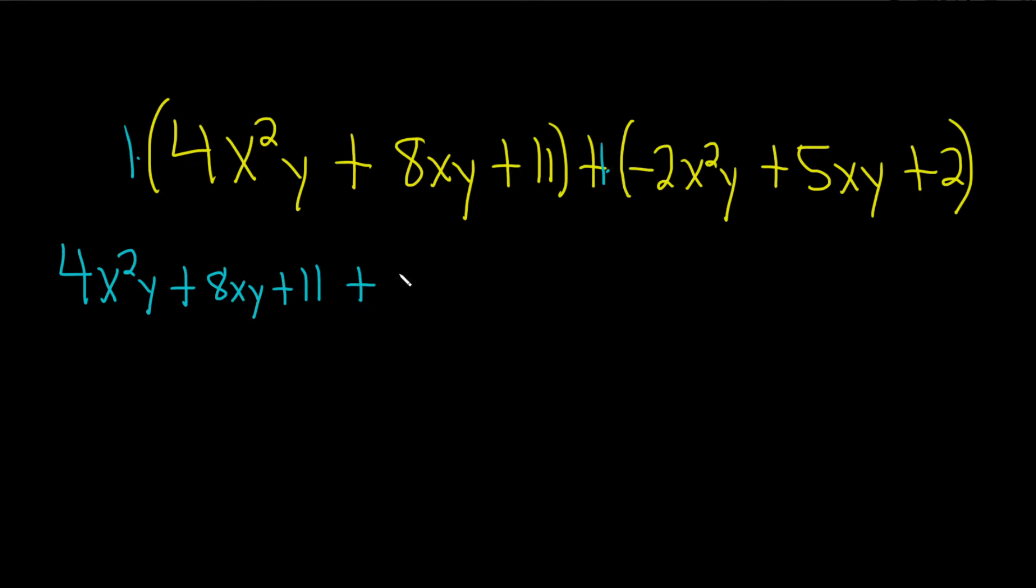Oh, it's actually not a plus sign, it's actually a negative 2x squared y, right? Because there's a plus here, and so there's a negative here, so this is negative 2x squared y. And plus 5xy, it's the next one. And then plus 2.